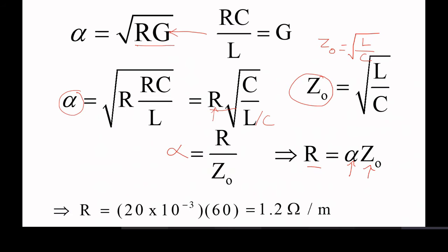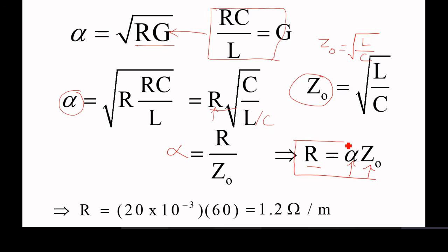In the attenuation constant of the distortionless line, we have used the condition R by L is equal to G by C. Then we have expressed R in terms of the attenuation constant and characteristic impedance Z₀. So R is given as R equals alpha into Z₀. One value is found out.